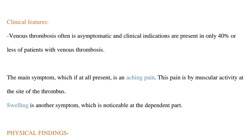Clinical features: venous thrombosis often is asymptomatic, and clinical indications are present in only 40% or less of patients with venous thrombosis. The main symptom is an aching pain, aggravated by muscular activity at the site of the thrombus. Sometimes there is only a feeling of heaviness aggravated by standing. Swelling is another symptom, noticeable at the dependent part.